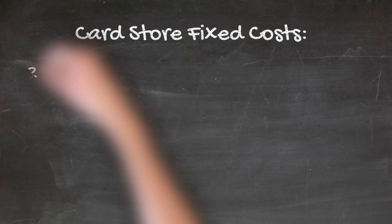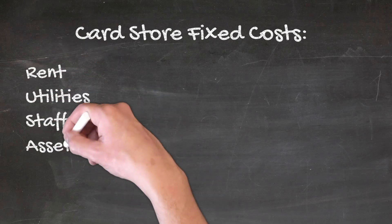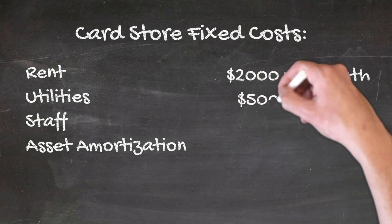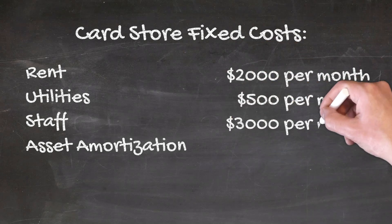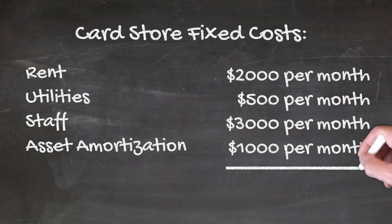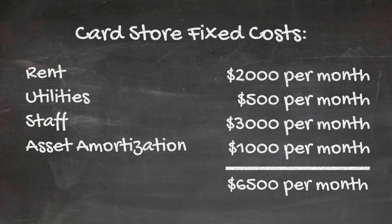Let's start with a retail card store. Let's assume your fixed costs are comprised of rent, utilities, staff, and asset amortization — basically the shelves and all of the store design amortized out over the life of the store. Your rent is $2,000 a month, utilities are $500 a month, staff cost is $3,000 a month, and asset amortization is $1,000 a month.